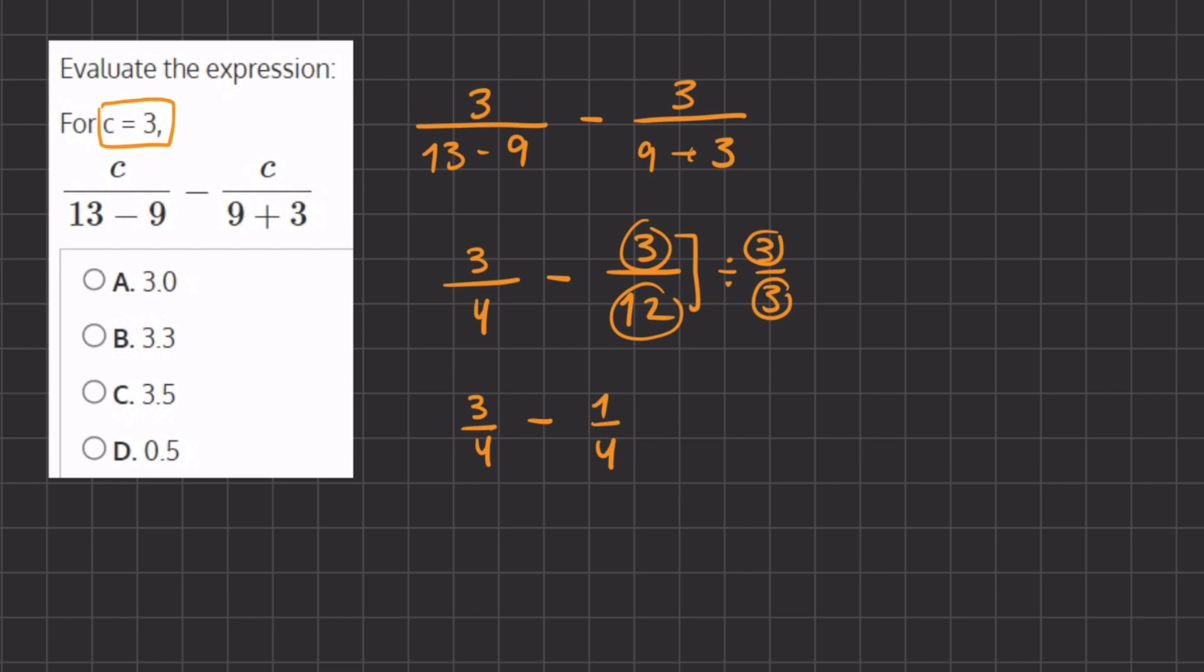So now it is going to be a lot simpler for us to solve this subtracting fractions problem because we have common denominators. So all we have to do is subtract our numerators, 3 minus 1, which gives us 2, and we keep our same denominator, which is 4.